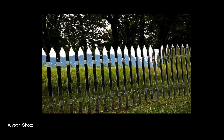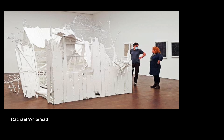Moving on to other examples using different pieces of architecture: Allison Shat does mirrored fence sculpture pieces, which are pretty neat. Rachel Whiteread is really interested in the interiors and deconstruction of architecture — she'll create pieces in a single solid color, and she even does castings of the insides of houses. She's a really great example of taking a piece of architecture and deconstructing it.